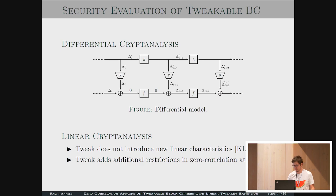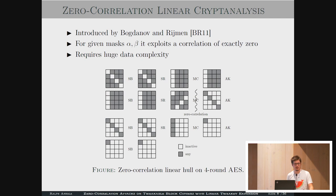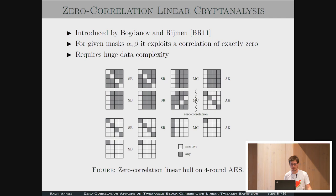Zero-correlation attacks were first introduced by Bogdanov and Reimann. Basically, for two given masks alpha and beta, it exploits a correlation of exactly zero. One of the drawbacks of zero-correlation attacks is that they normally require a huge data complexity. We can see the zero-correlation attack on four-round AES: we have some active masks in the beginning propagating with probability one, and the same from the bottom, and we see that it doesn't match in the middle — giving zero correlation.